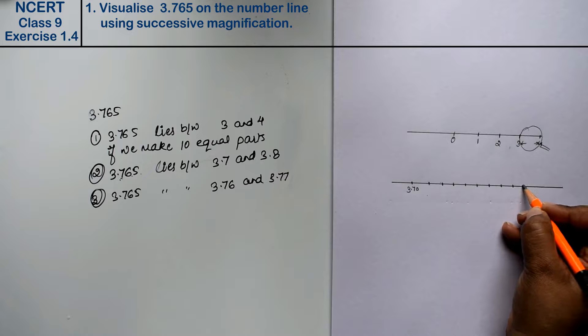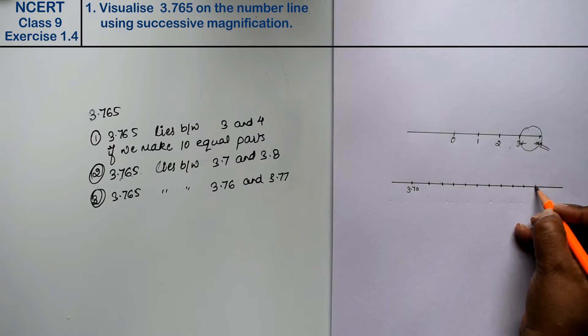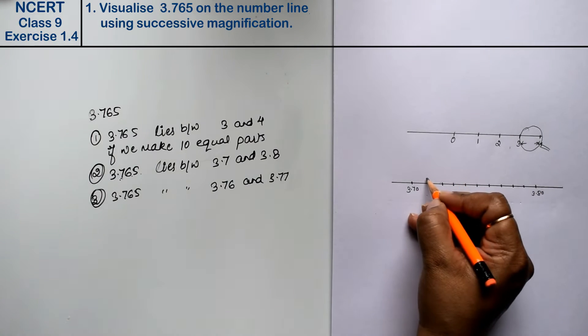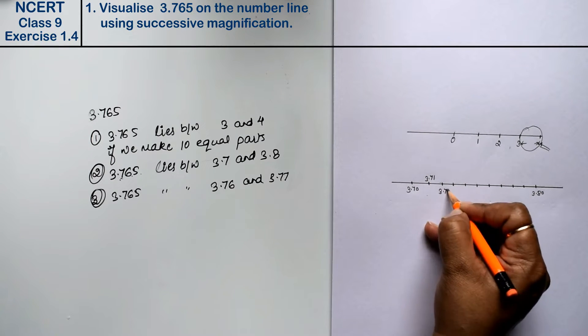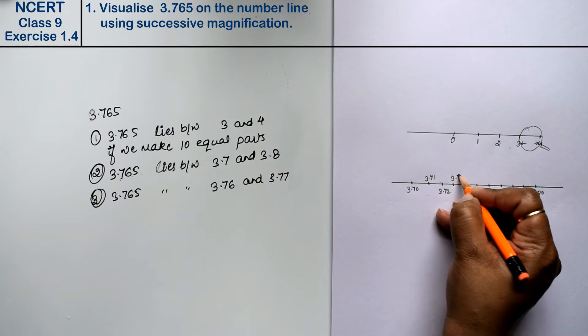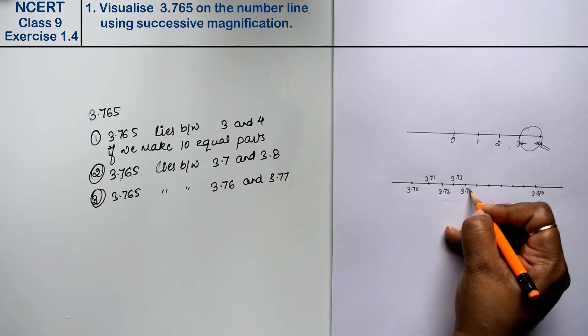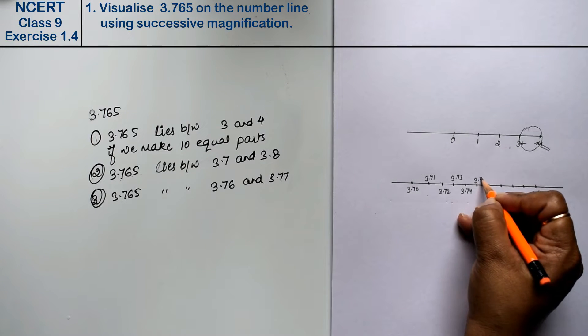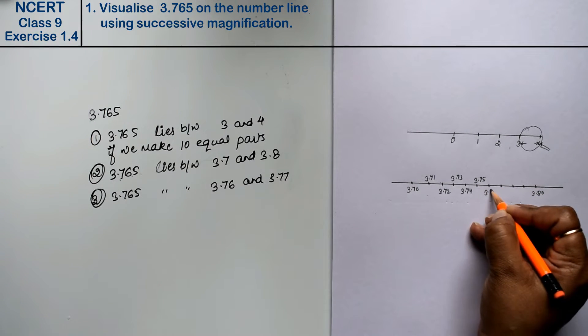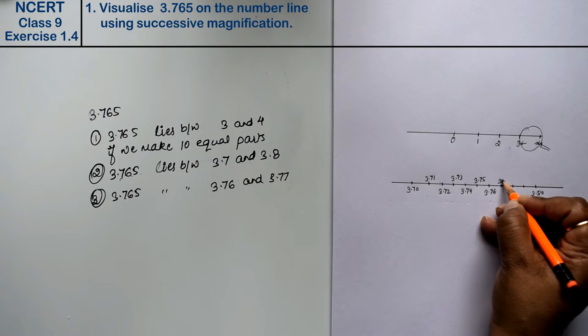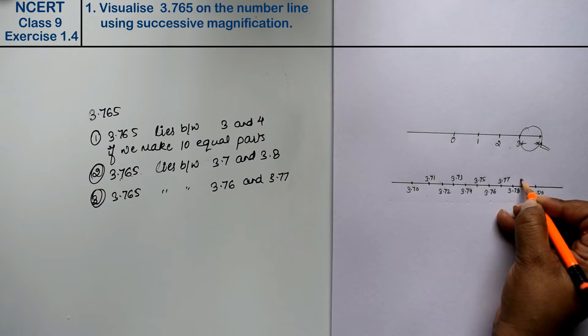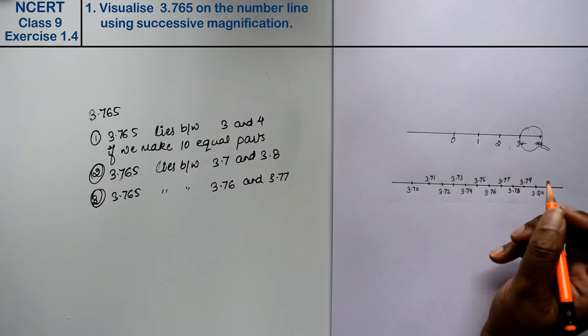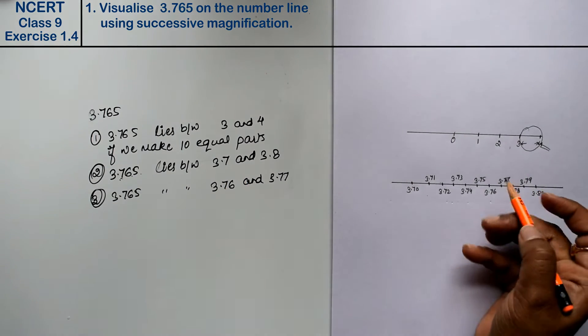So here is 3.71, 3.72, 3.73, 3.74, 3.75, 3.76, 3.77, 3.78, 3.79 and this number is 3.76.